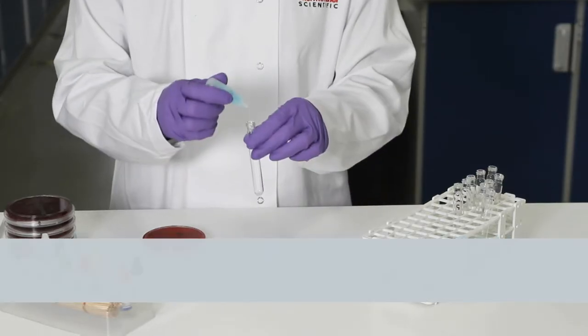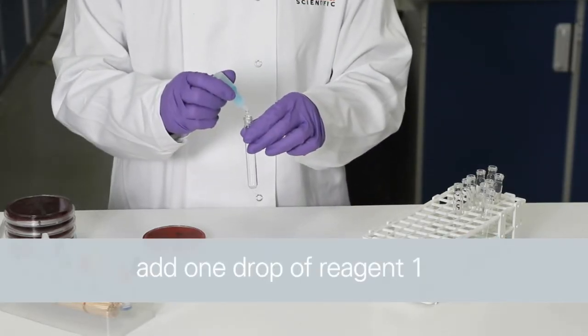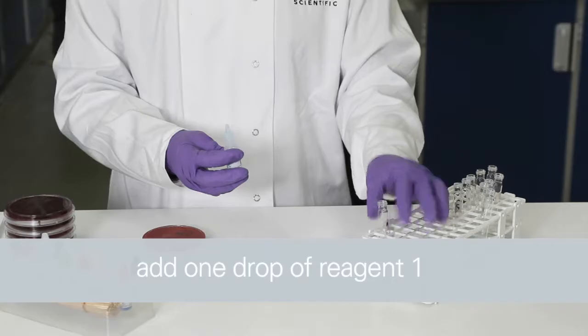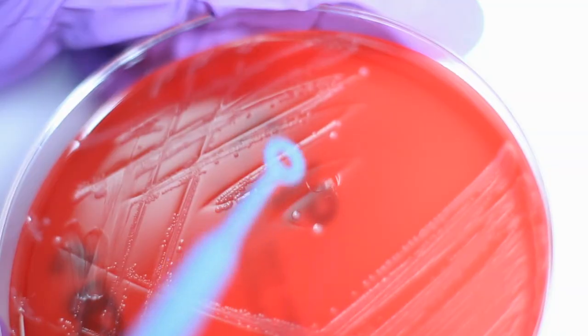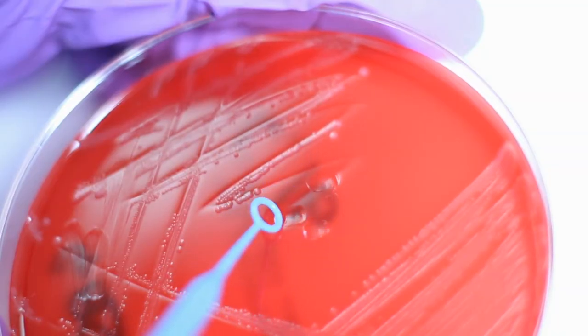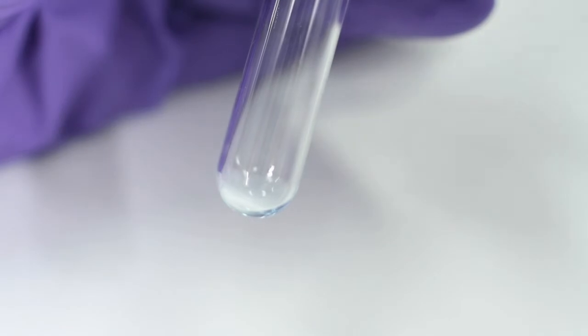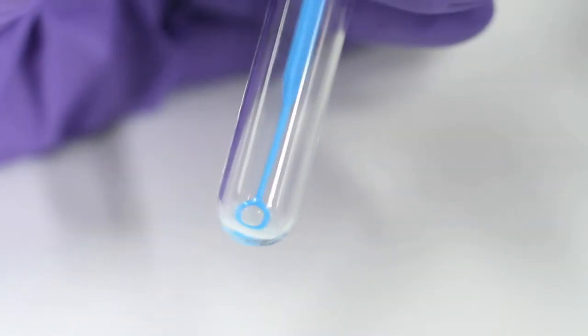Add one drop of reagent 1 to a tube. Choose 1 to 4 isolated colonies depending on colony size and emulsify in the same tube.